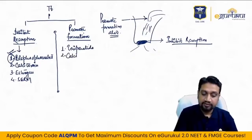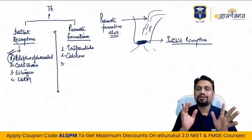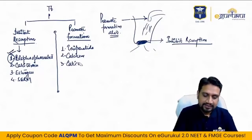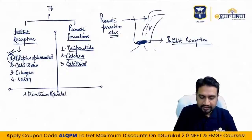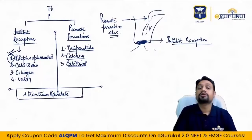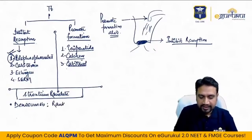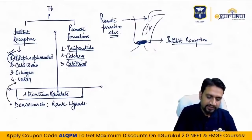Strontium ranelate has dual action — it both inhibits resorption and promotes bone formation. Denosumab blocks RANK ligands, preventing osteoclast activation, thereby inhibiting resorption. Newer FDA-approved drugs include abaloparatide — works like teriparatide — and romosozumab — works like strontium with dual action. These were FDA approved around 2018-2019.